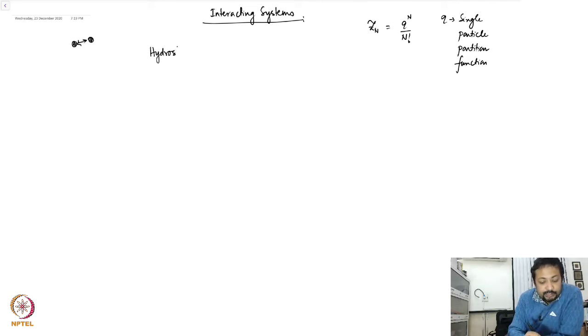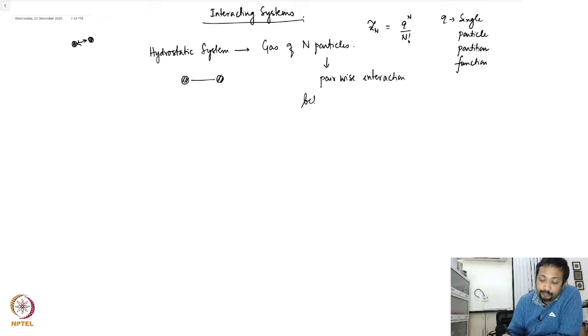So we will take the example of a hydrostatic system, for example a gas of N particles, and each of these particles interact. There is a pairwise interaction between these particles. We will call them V of r_ij.